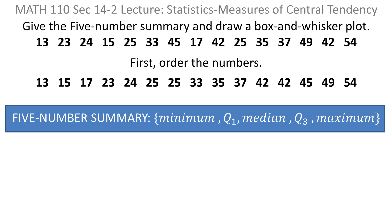Remember what the five-number summary consists of. It consists of the minimum, the first quartile value, the median, the third quartile value, and the maximum.